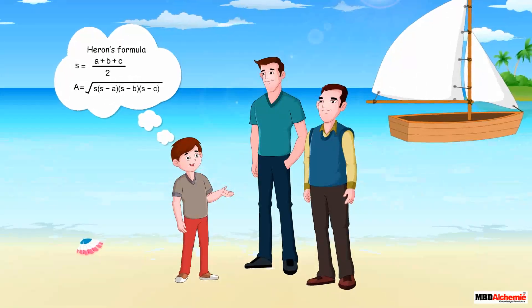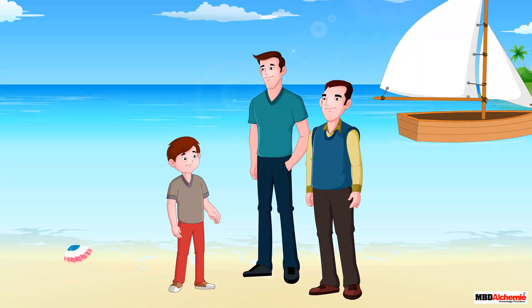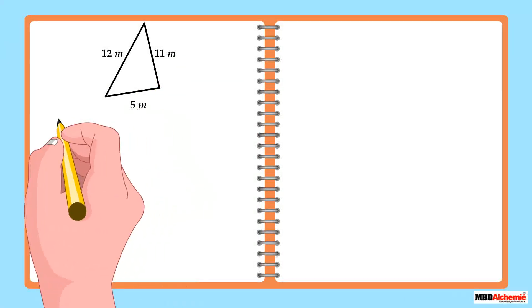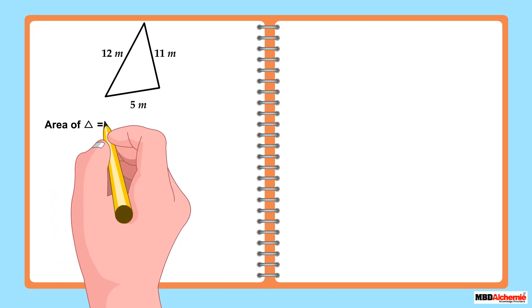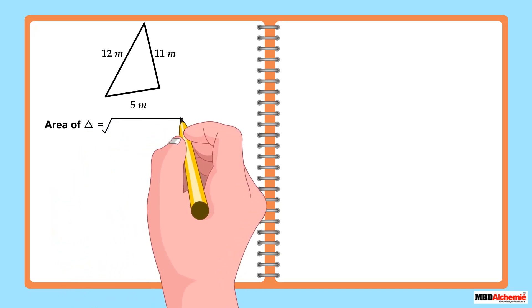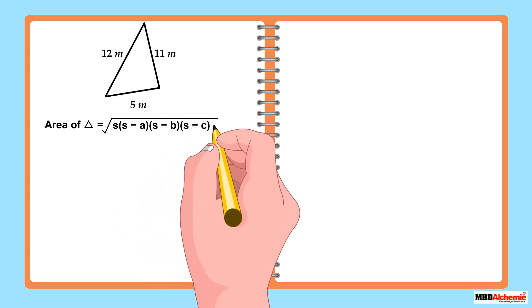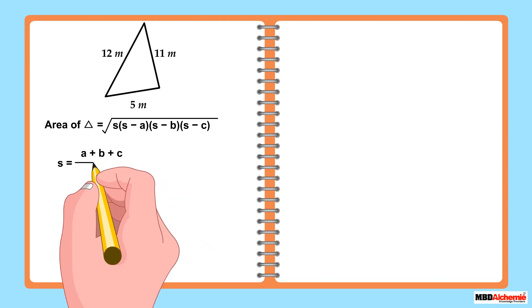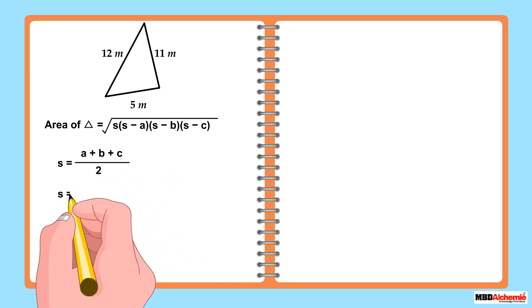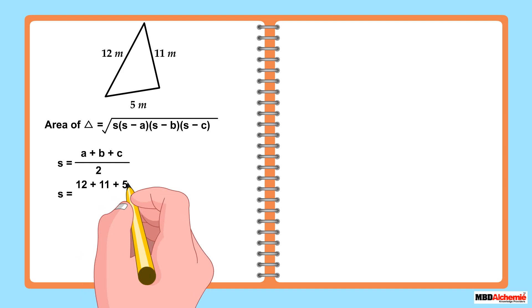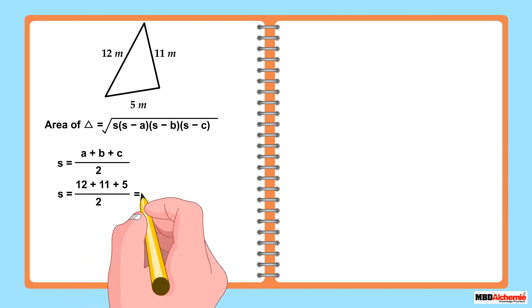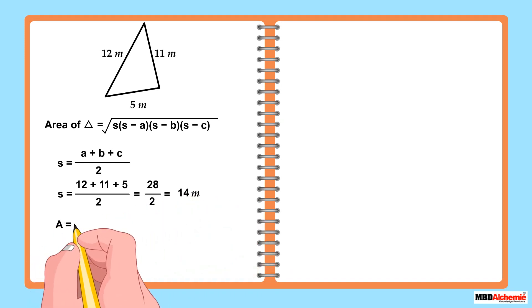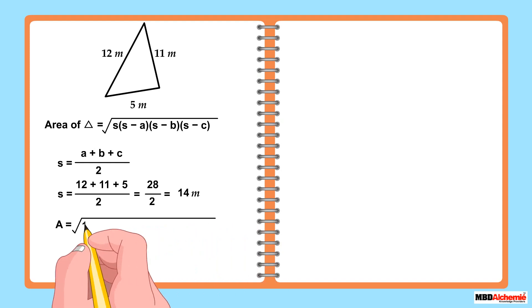Sid says that by using Heron's formula we can find the area of any triangle whose dimensions are given. He asks for a notebook and a pen, draws a rough diagram of the sail, and starts calculating the area. He applies Heron's formula — first he calculates the semi-perimeter by adding all the dimensions of the sail and dividing by two, then substitutes the values into the formula.